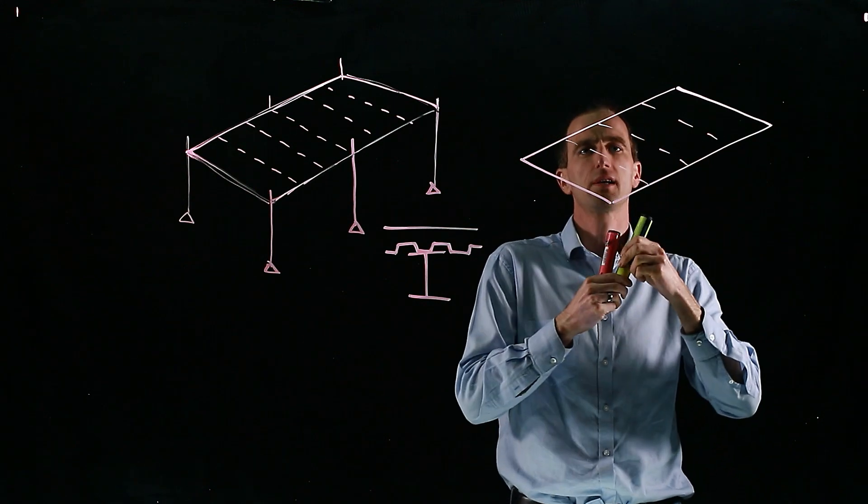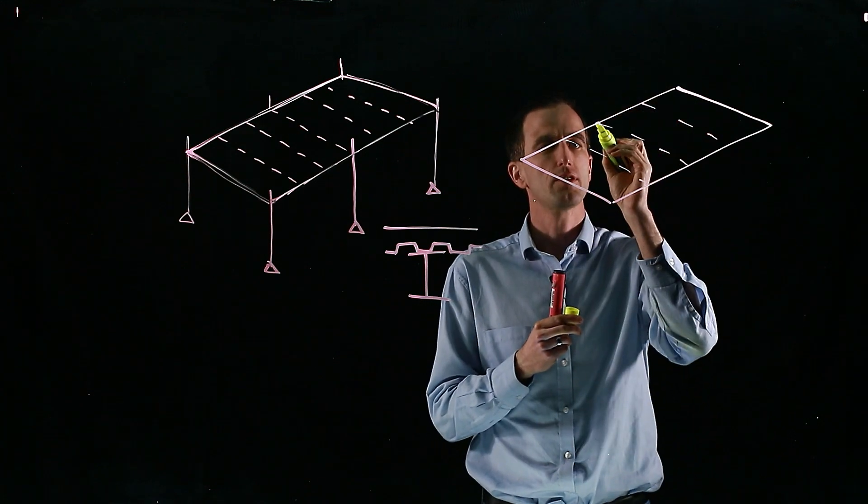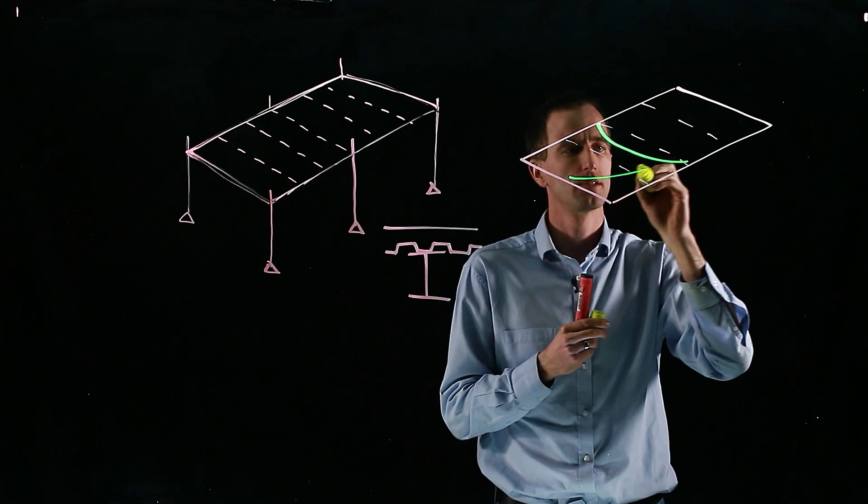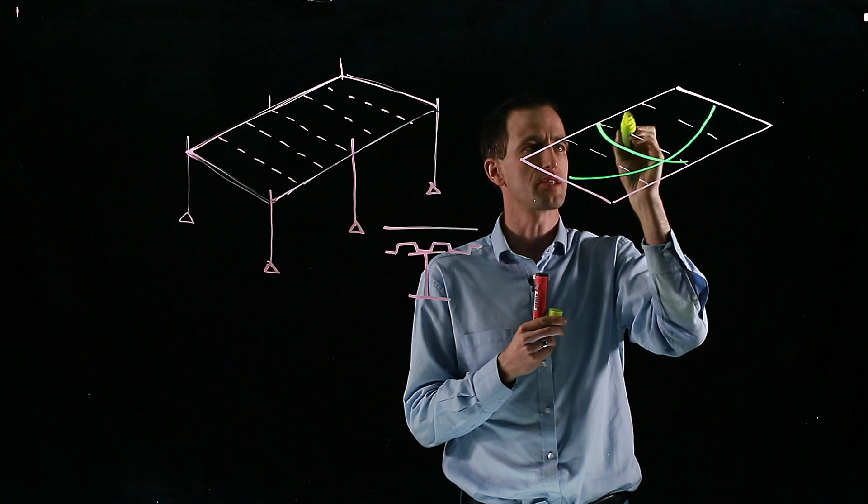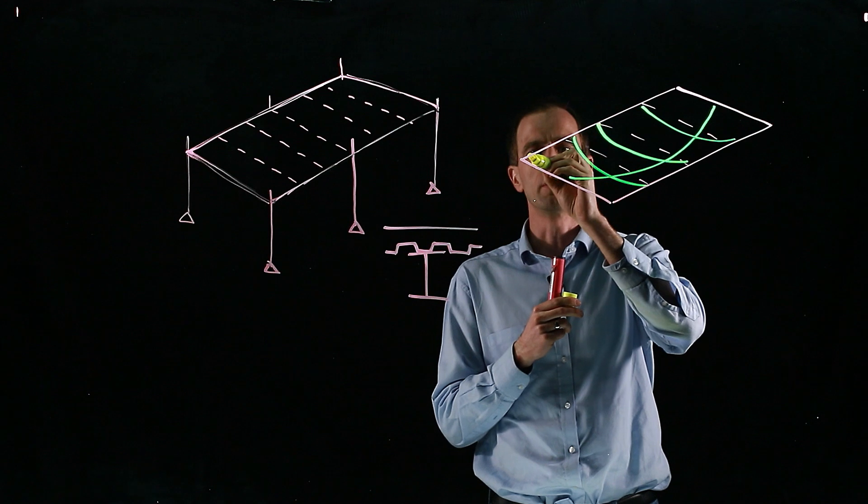The concrete is protecting it and we get the tensile membrane behavior occurring where, even though you get large deflections, so I'm just exaggerating the deflections of the floor, this floor basically hangs from the perimeter.